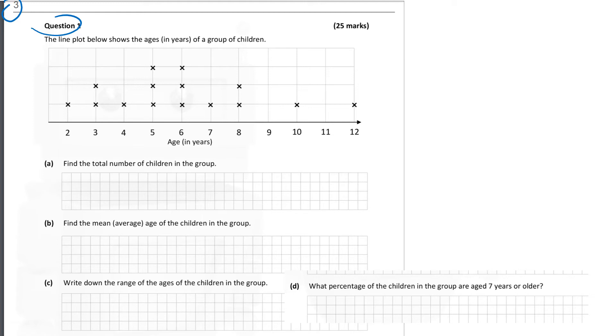So let's find the total number of children in the group. So I think the easiest thing to do is just total the number of data sets here. So there's 1 there, 2, 1, 3, 3, 1, 2, 1, and 1. So 3, 4, 7, 10, 11, 12, 13, 14, 15. So there are 15 children in the group.